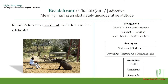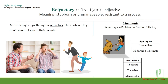Synonyms for 'recalcitrant': stubborn, obdurate, unwilling, intractable, unmanageable. Antonyms: docile, compliant, amenable. The next word is 'refractory,' an adjective also meaning stubborn or unmanageable — resistant to a process.